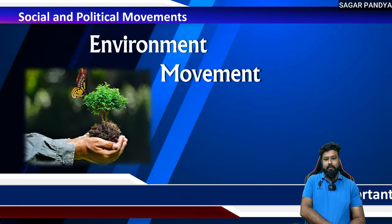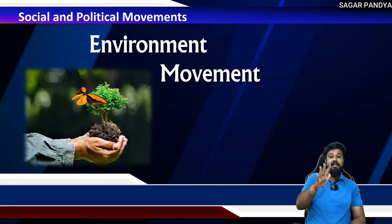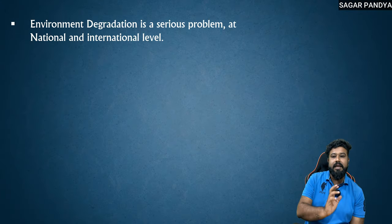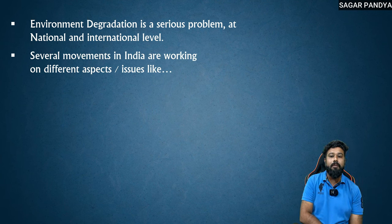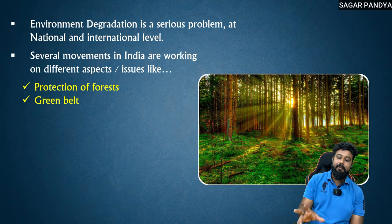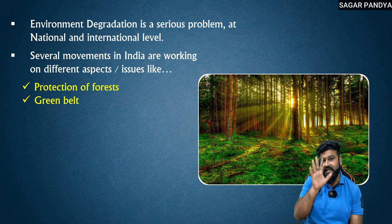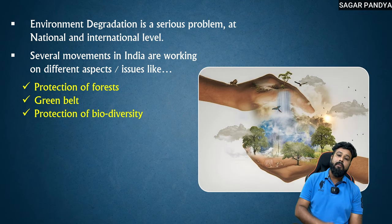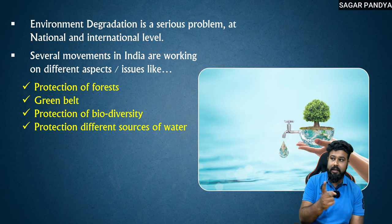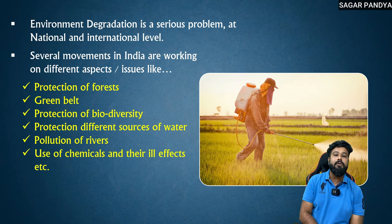The last part we are going to study is the environment movement. This is very important, and it is a topic in this chapter that may seem obvious but is difficult to write the answer for in an exam. Environment degradation is a serious problem at national and international level. So there are several movements in India working on different aspects — like protection of forests, protecting green belt areas where no construction is allowed and the land is kept only for forest, protection of biodiversity, protection of different sources of water, ending river pollution, and addressing the use of chemicals and their ill effects.